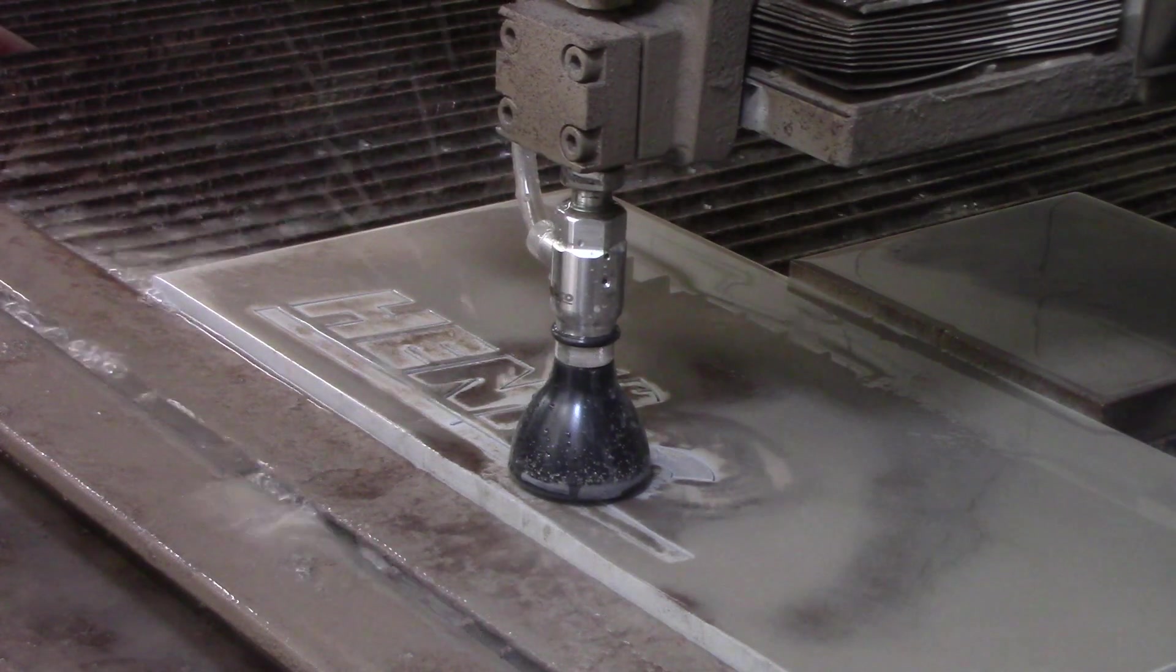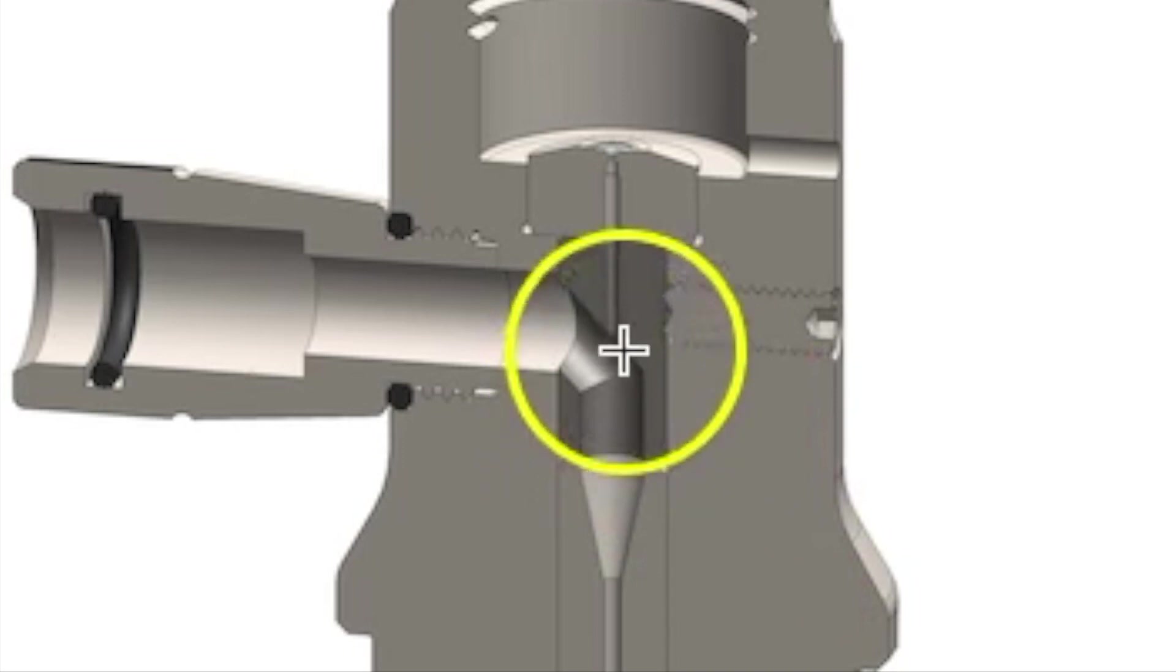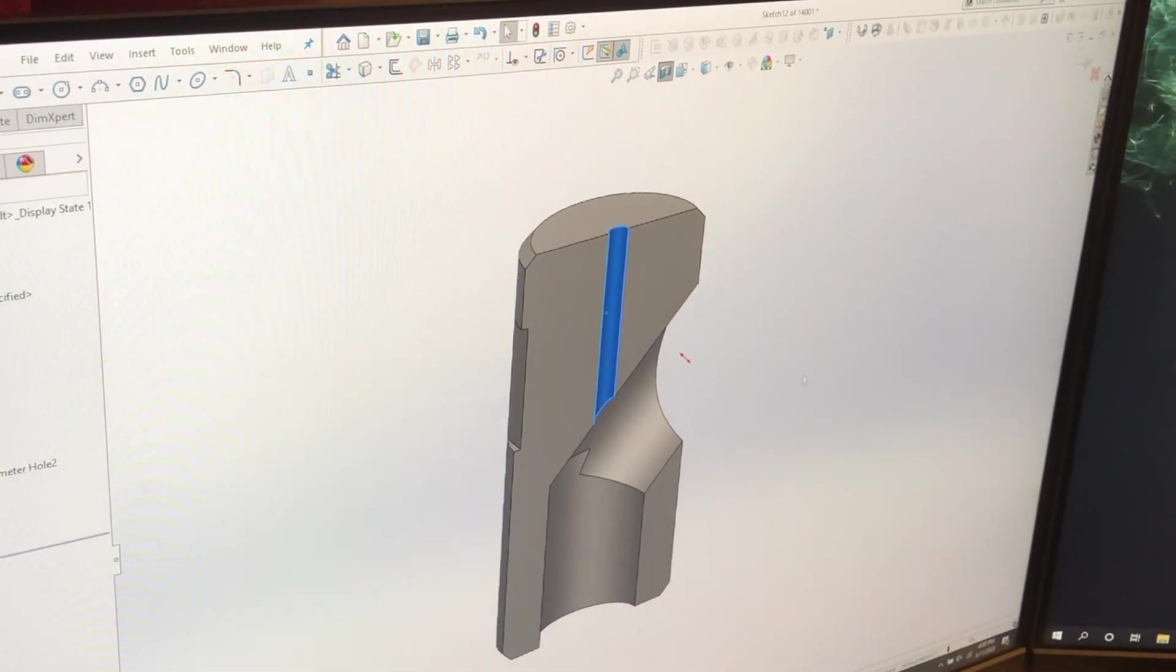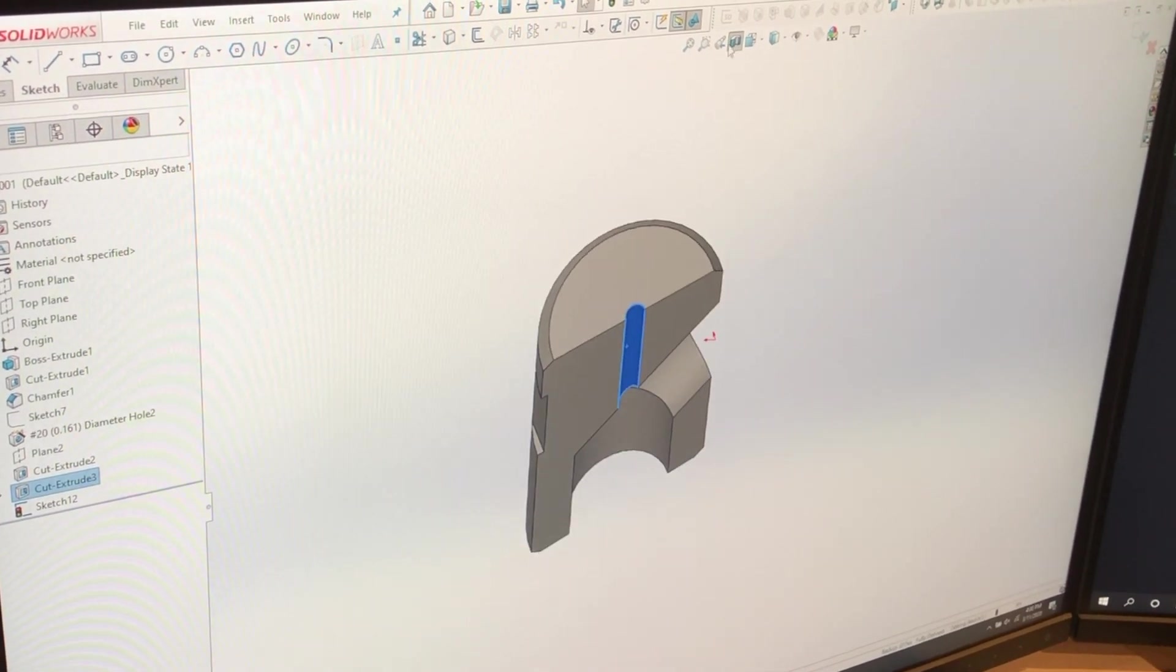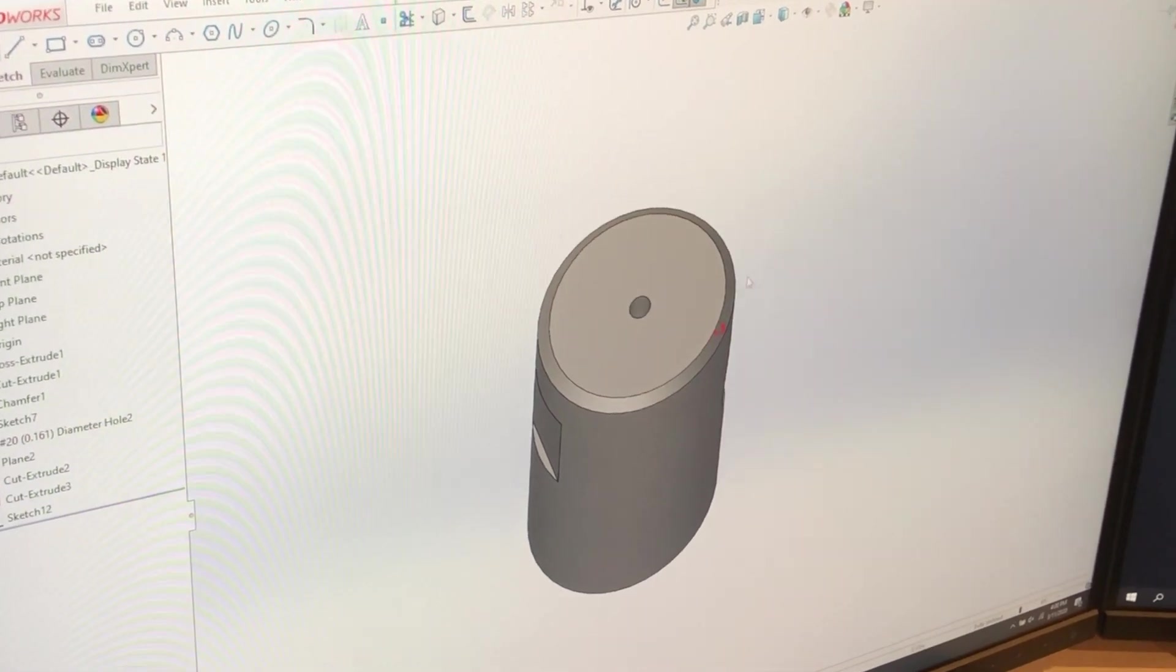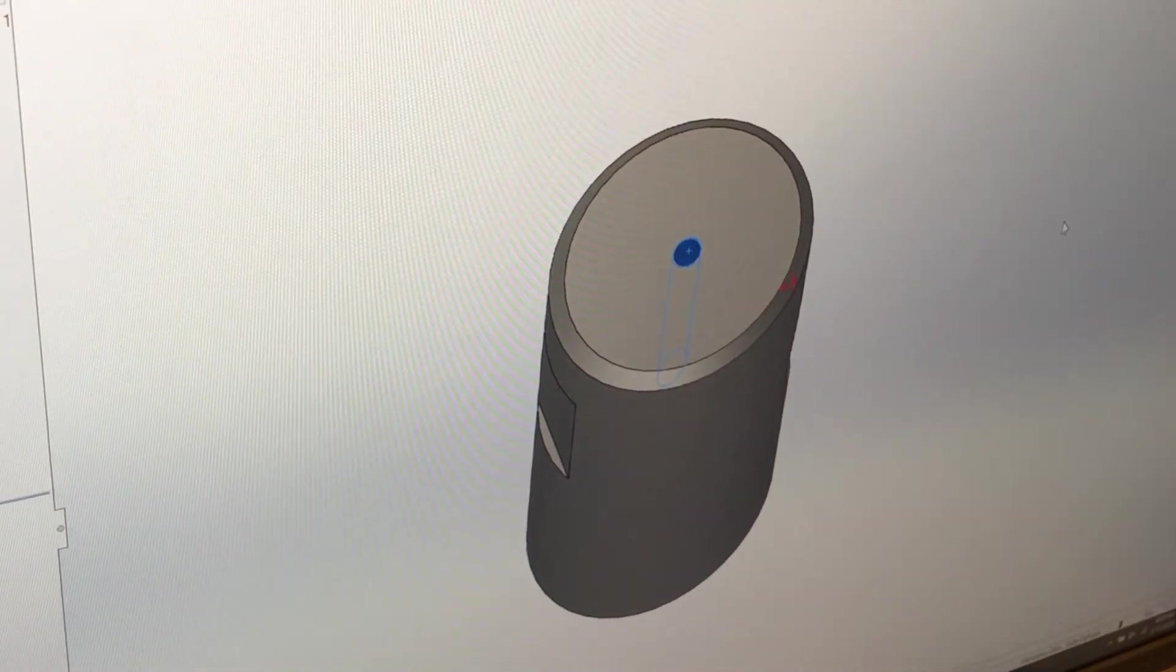The reason diamond orifices fail is from abrasive eroding from the bottom upwards, which is why the carbide mixing chambers are designed the way they are. You'll notice the mixing chambers have a small 30 thousandths through hole. They also feature an angled shelf to direct abrasive back towards the top of the nozzle, minimizing wear on the bottom of the orifice.